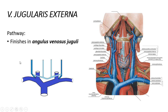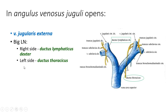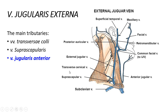The vein can also flow into the nearest veins like the vena jugularis interna, and very rarely into the vena subclavia. At the angulus venosus juguli, not only the external jugular vein flows in, but also on the right side the ductus lymphaticus dexter, and the ductus thoracicus also flows into this place.